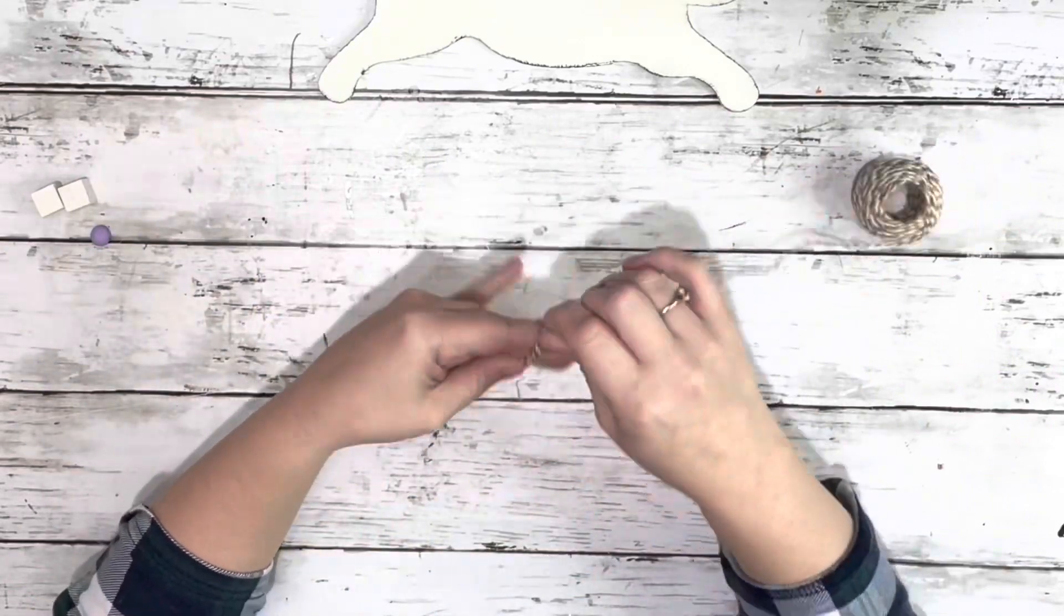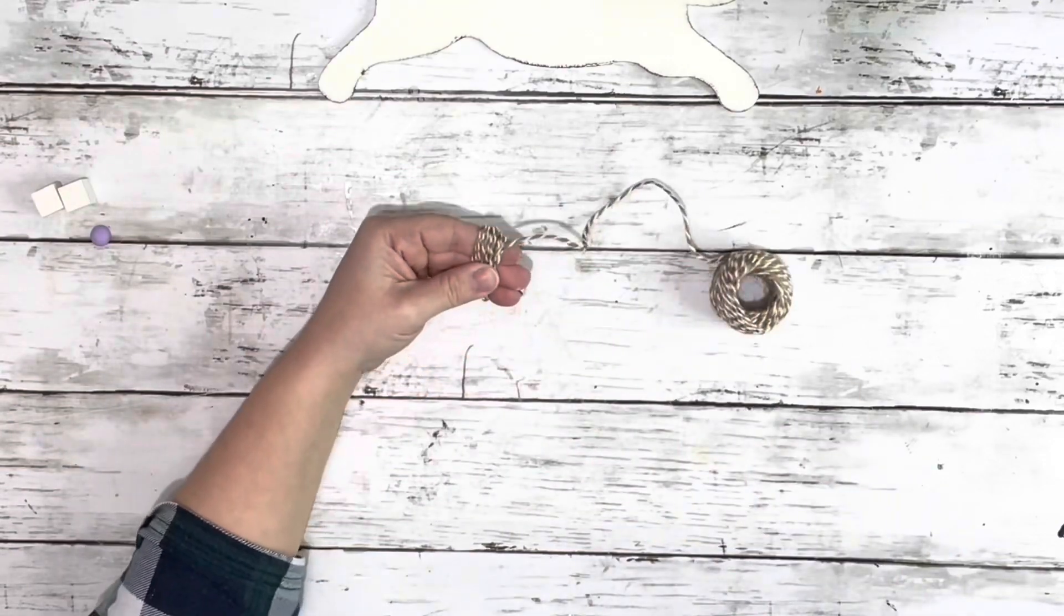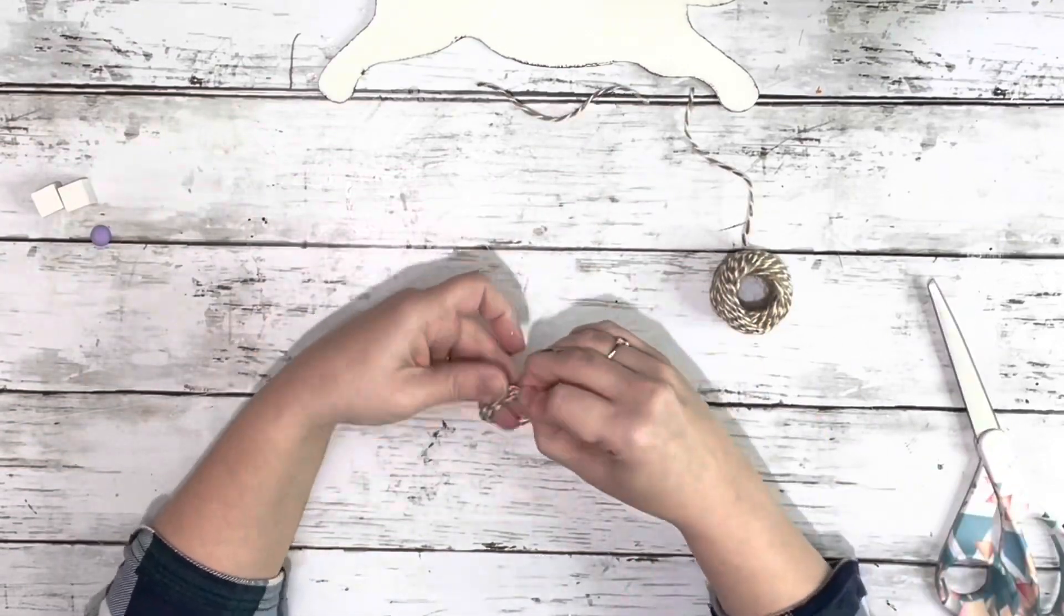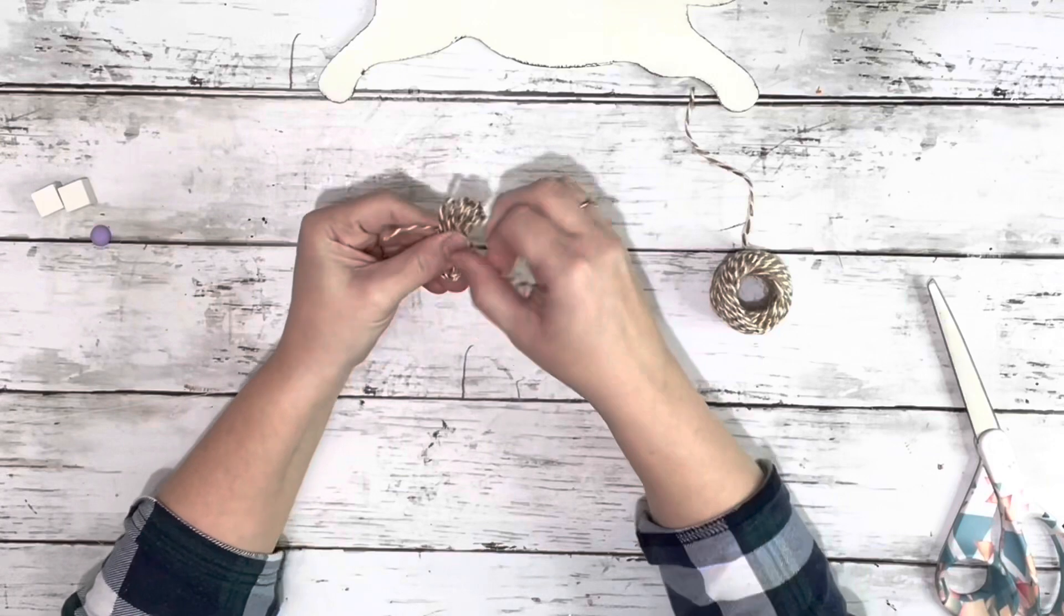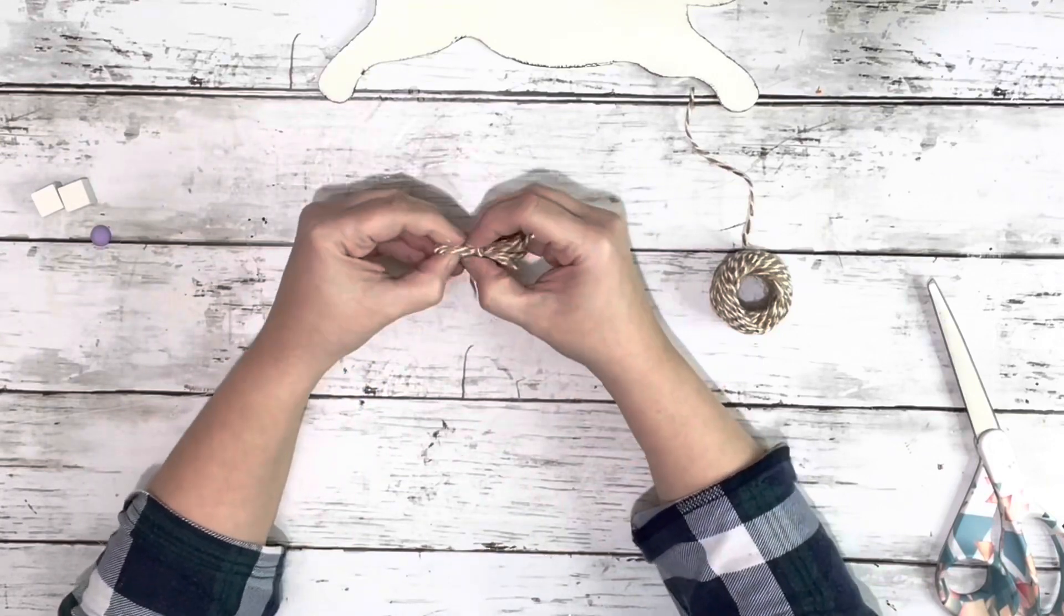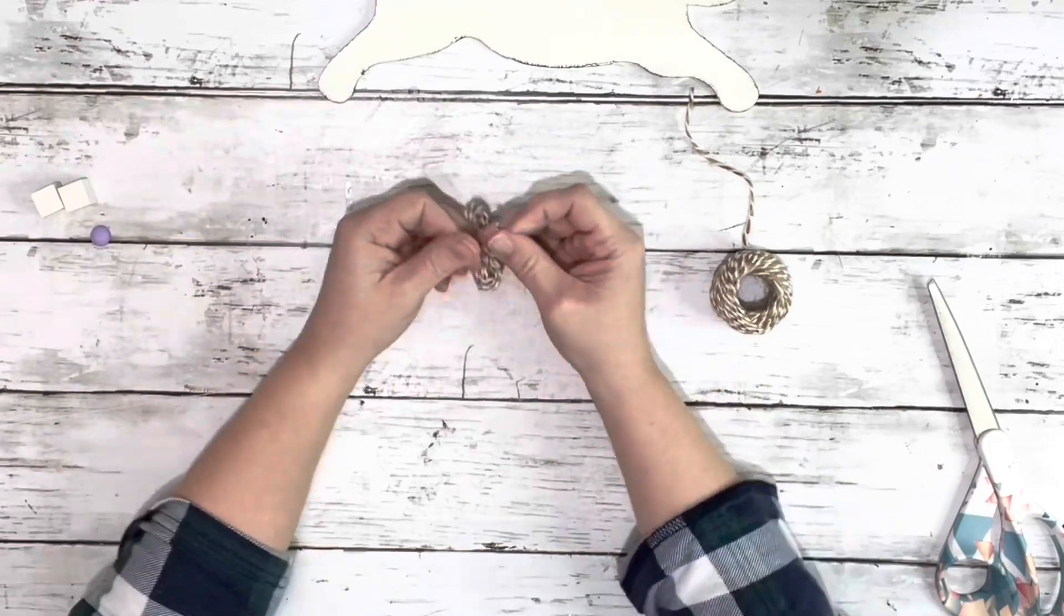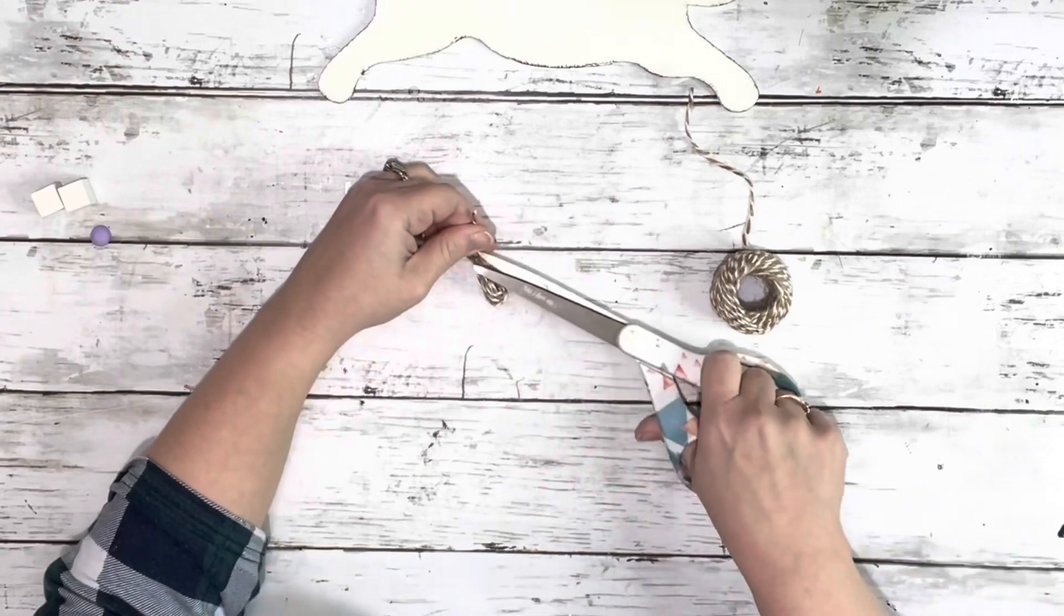Next I took this tan and white twine that I get from Dollar Tree and just wrapped it around three of my fingers a bunch of times, probably about ten. Then I pinched it in the center after I removed it from my hands and tied a knot with the same twine right in the center nice and tight. I did make two of those.